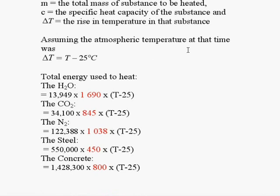Assuming that the atmospheric temperature, as we mentioned before, is 25, delta T would be T minus 25 degrees Celsius.